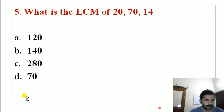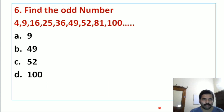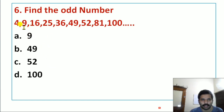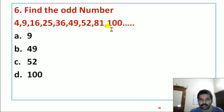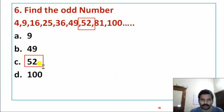Next question: Find the odd number in the given series. Options are 9, 49, 50, 200. Looking at the pattern: 2×2=4, 3×3=9, 4×4=16, 5×5=25, 6×6=36, 7×7=49, 8×8=64, 9×9=81, 10×10=100. The number 52 does not fit the pattern of perfect squares, so the correct answer is 52.